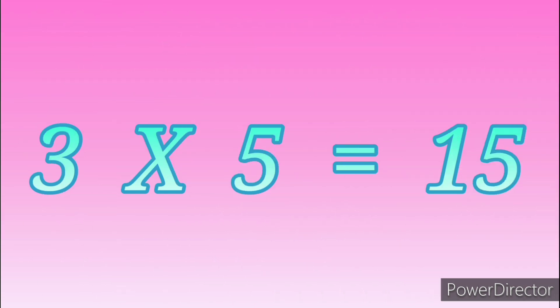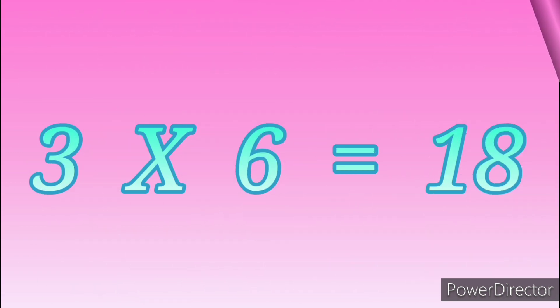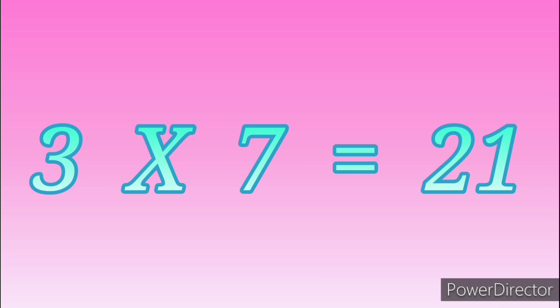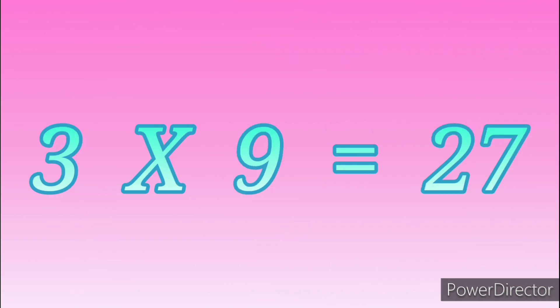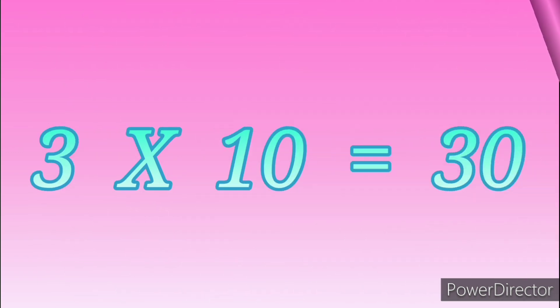3 fives are 15. 3 sixes are 18. 3 sevens are 21. 3 eights are 24. 3 nines are 27. 3 tens are 30.